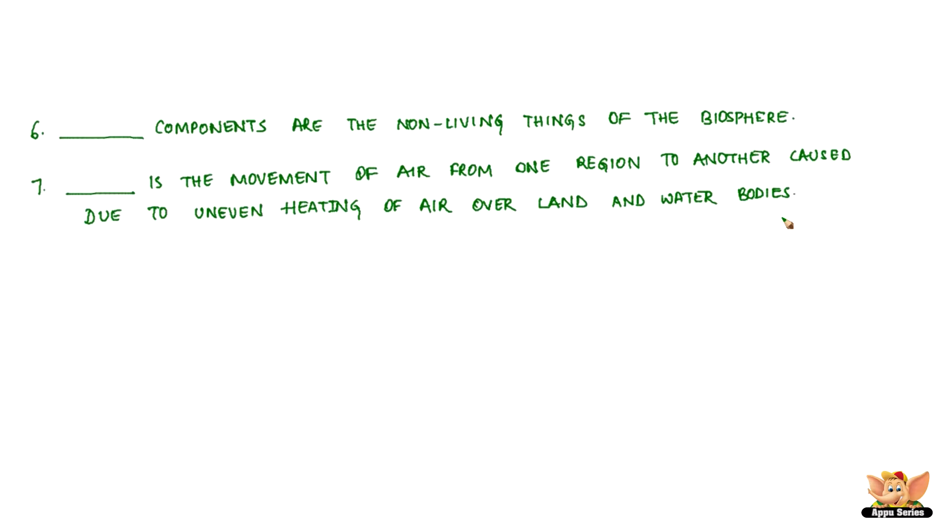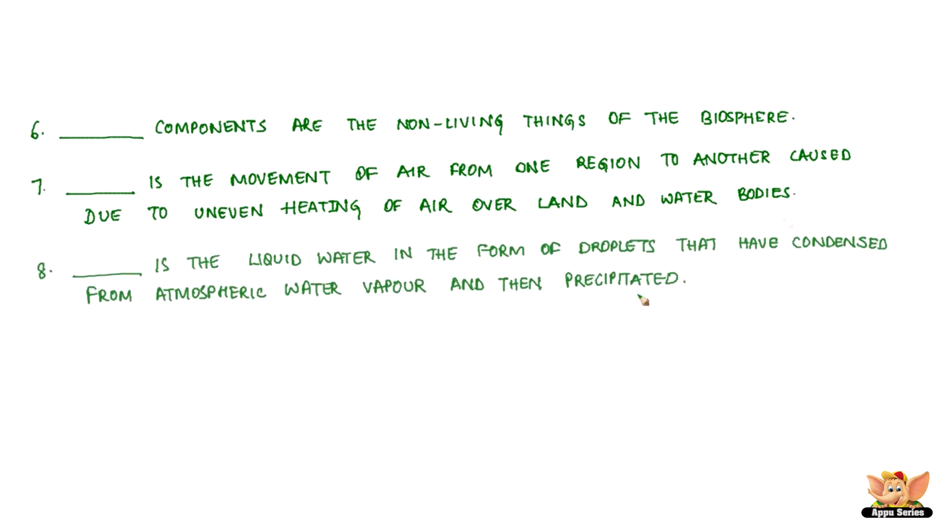Dash is the movement of air from one region to another caused due to uneven heating of air over land and water bodies. Dash is the liquid water in the form of droplets that have condensed from atmospheric water vapor and then precipitated.